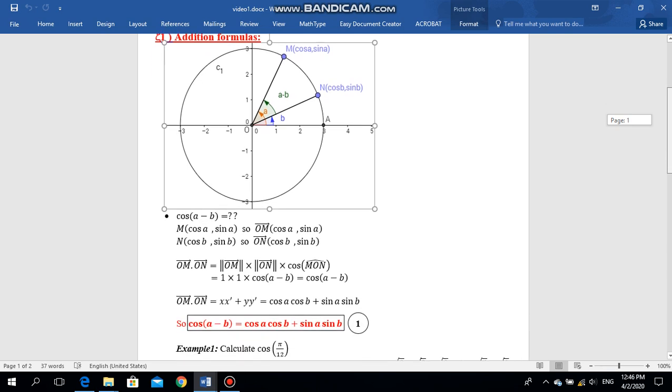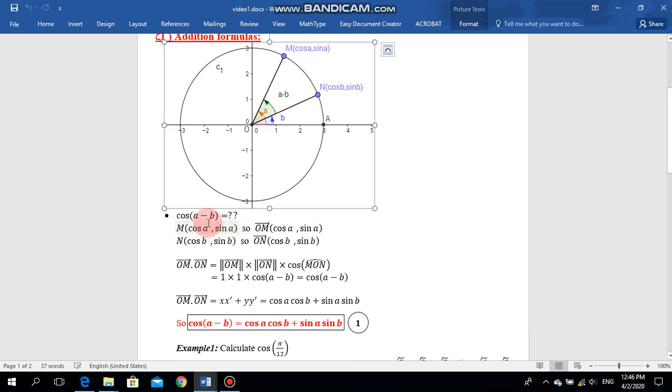Now, we want to derive the cosine of the angle A minus B. Using scalar product, we find these two vectors, OM and ON by cosine A, sine A and cosine B, sine B. So we have to find the formula of cosine (A minus B) using the dot product.